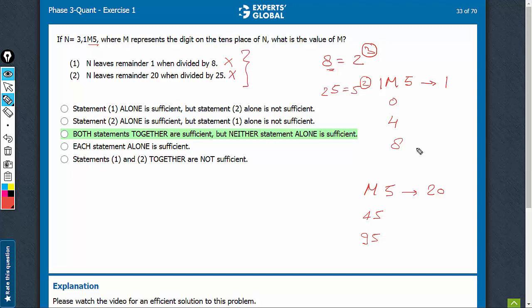Combine the two. Statement 1 says 0, 4, or 8. Statement 2 says 4 or 9. Out of the 3 and 2 values, it's only 4 that is common. So on combining, we can say that M is equal to 4. Combining worked. C is the right answer choice.